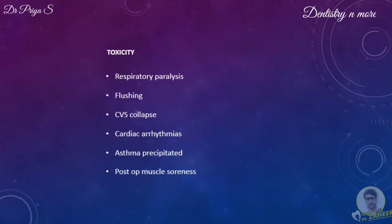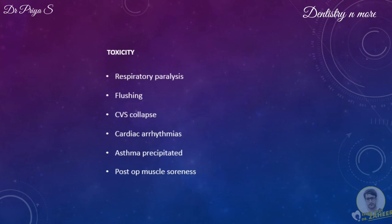Complications of muscle relaxants due to toxicity or overdose include respiratory paralysis and prolonged apnea, which is the most important complication. Flushing can occasionally occur with agents like atracurium and mivacurium. Fall in blood pressure and cardiovascular collapse can occur especially in hypovolemic patients. Cardiac arrhythmias and even cardiac arrest can occur especially with succinylcholine. Exacerbation of asthma with histamine-releasing neuromuscular blockers is also common. Postoperative muscle soreness can appear after administration of succinylcholine.